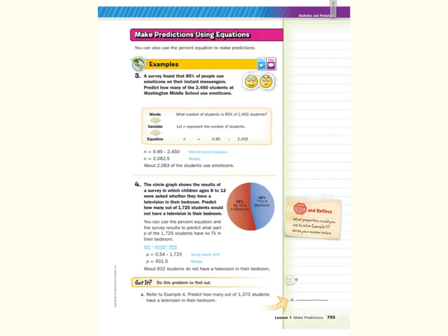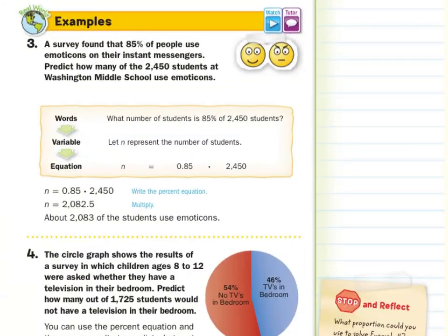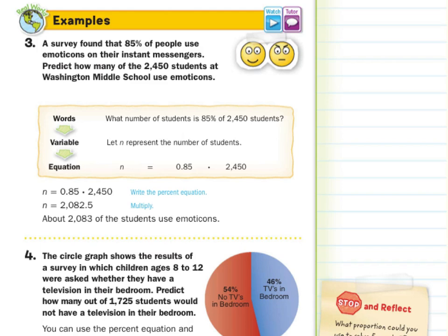Our second heading was Make Predictions Using Equations — you can also use the percent equation to make predictions. In our third guided example, a survey found that 85% of people use emoticons on their instant messengers. Predict how many of the 2,450 students at Washington Middle School use emoticons. In words: what number of students is 85% of 2,450? Let N equal this number, so N = 0.85 × 2,450 = 2,082.5, which rounds to about 2,083 students.